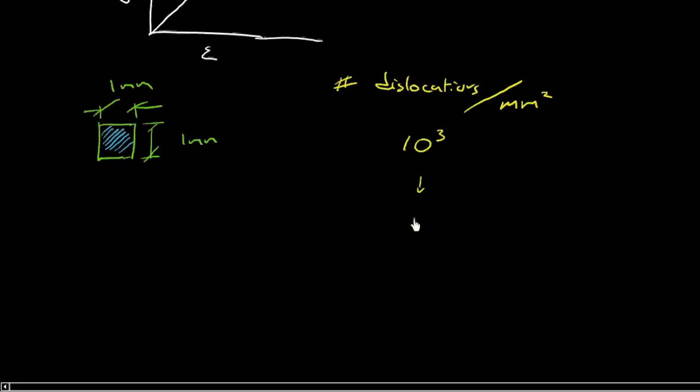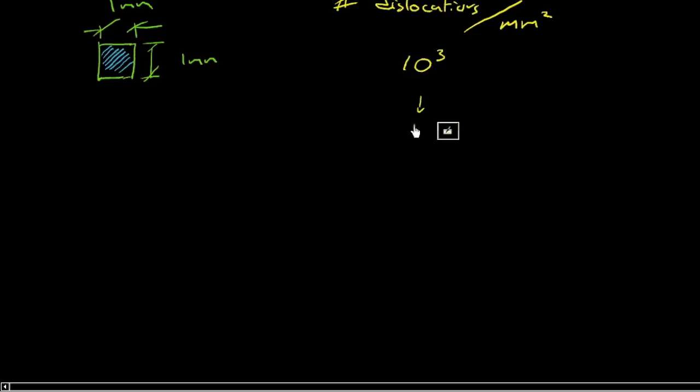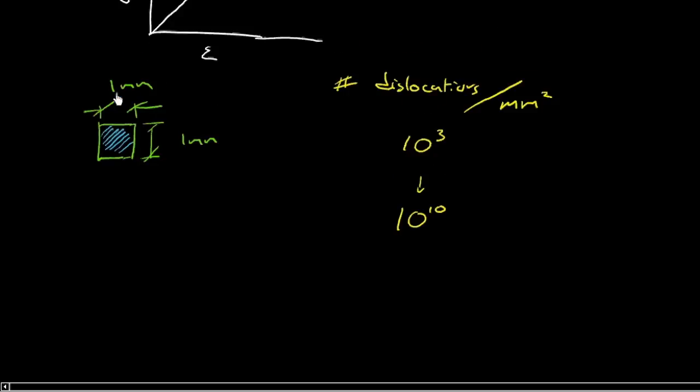all the way up to, for something that's been heavily cold worked with a lot of plastic deformation, you could be up to about 10 to the 10, 10 billion dislocations per square millimeter. Square millimeter, that's a tiny little area. So there's a huge, huge number of dislocations in every metal. And most metals, you look around you, most metals can be deformed somehow to their final shape.